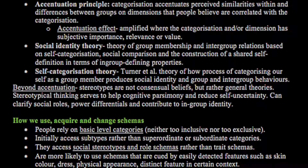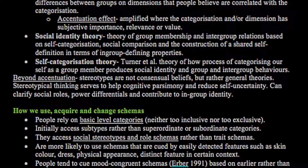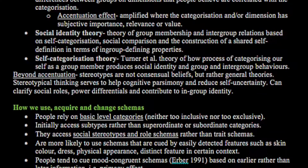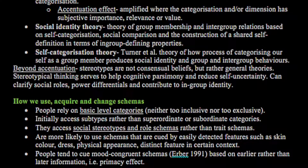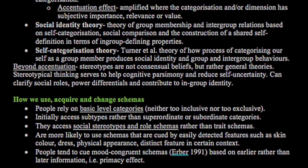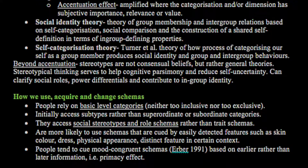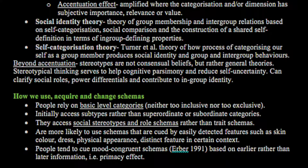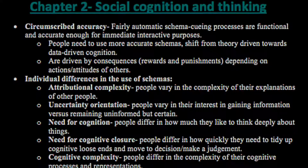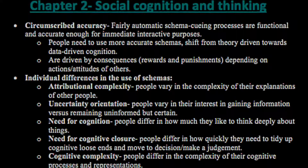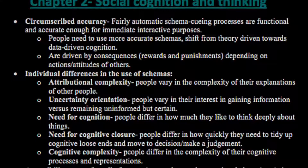How we use, acquire and change schemas: people rely on basic-level categories, which are neither too inclusive nor too exclusive, and they access social stereotypes and role schemas rather than trait schemas. They are more likely to use schemas cued by easily detected features such as skin colour, dress, physical appearance, and distinct features in certain contexts. People tend to cue mood-congruent schemas, based on earlier rather than later information, i.e. the primacy effect. Circumscribed accuracy refers to fairly automatic schema-cueing processes that are functional and accurate enough for immediate interaction purposes. When people need more accurate schemas, they shift from theory-driven towards data-driven cognition.